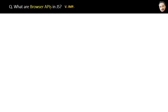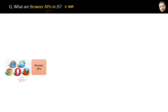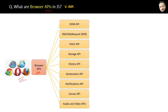What are browser APIs in JavaScript? We have many browsers, and these browsers provide us with some built-in functionalities. Those functionalities or APIs are called browser APIs. Here you can see the list of browser APIs provided by the browser. Each of these APIs are a collection of some methods to manage the operations in them.